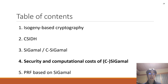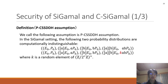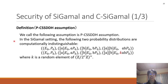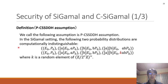Next, I explain the security and computational costs of C-GAMMA and CC-GAMMA. First, I explain the new assumption, the PC-SSDDH assumption. This assumption is similar to the DDH assumption. In the C-GAMMA setting, the following two probability distributions are computationally indistinguishable. The first distribution comes from a commutative diagram.